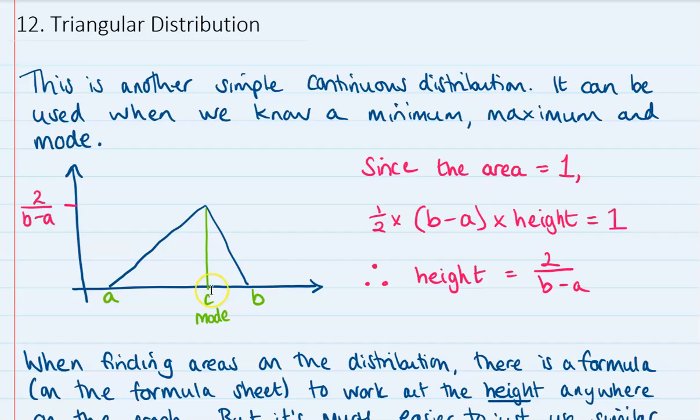We've got a minimum, a maximum, and a mode they get referred to as a, b, and c. So the height of our triangle we can work out because the triangle has to make one, so the height has to match that so that area will be equal to one. Half base times height makes one, so that height has to come out to 2 over b minus a.